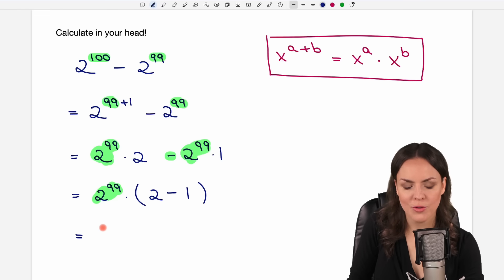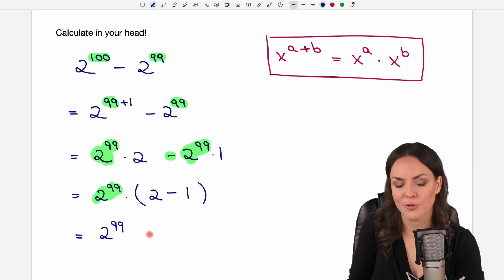And now we have 2 to the power of 99, and let's just calculate what we have in the parentheses. 2 minus 1 equals 1, so times 1, we don't have to write this, and we found our solution.